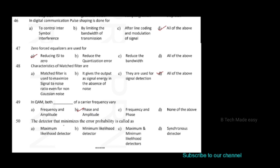The detector that minimizes the error probability is called what type of detector? The answer is the maximum likelihood detector. The detector that minimizes the error probability is called the maximum likelihood detector.